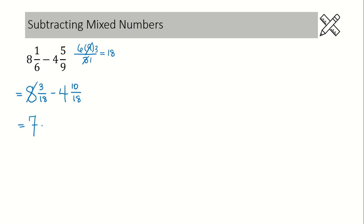Next, put in the denominator of 18 on your first fraction and then write down the rest of the question, so we can focus on what the numerator needs to be. What's happening is we borrowed one whole, which is 18 over 18, and then we're going to add that to 3 over 18, which gives us a numerator of 21 over 18.